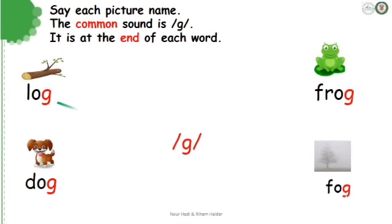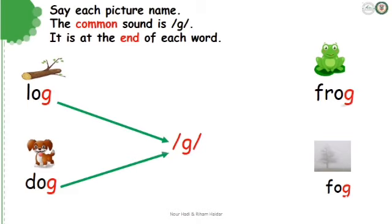The first picture — it is a log. Log. Let's continue with the second picture — it is a dog. Dog. Third picture — it is a frog. Frog. And let's look at the last picture. What's this? It is a fog. Fog.